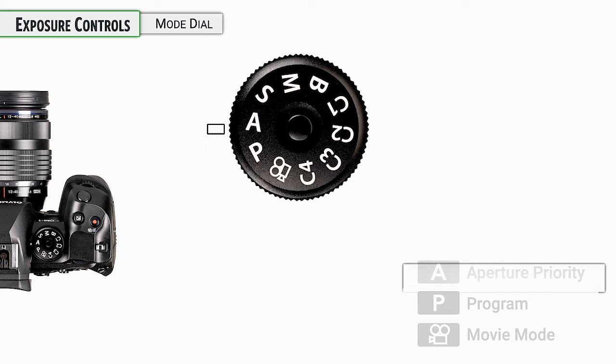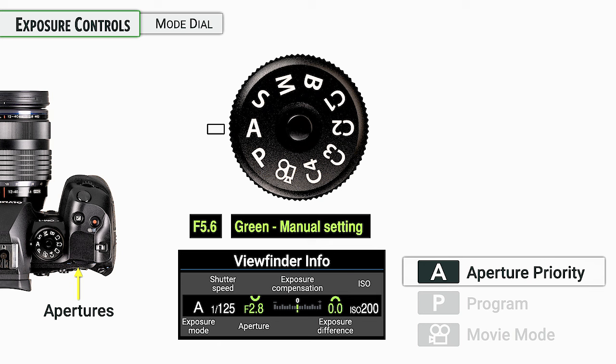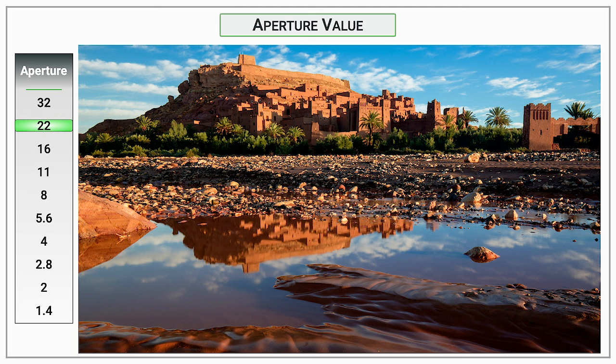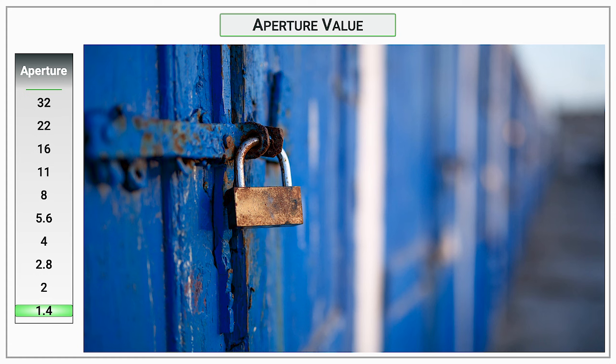Getting back into regular photo modes — next up is aperture priority. This is one of my favorite modes for general photography. You get to set the aperture and the camera figures out the shutter speed. If you want lots of depth of field, you can dial it down to f/11, f/16, f/22, or f/32 depending on your lens. For a really shallow depth of field, you can open it up to f/1.4, f/2, or f/2.8.